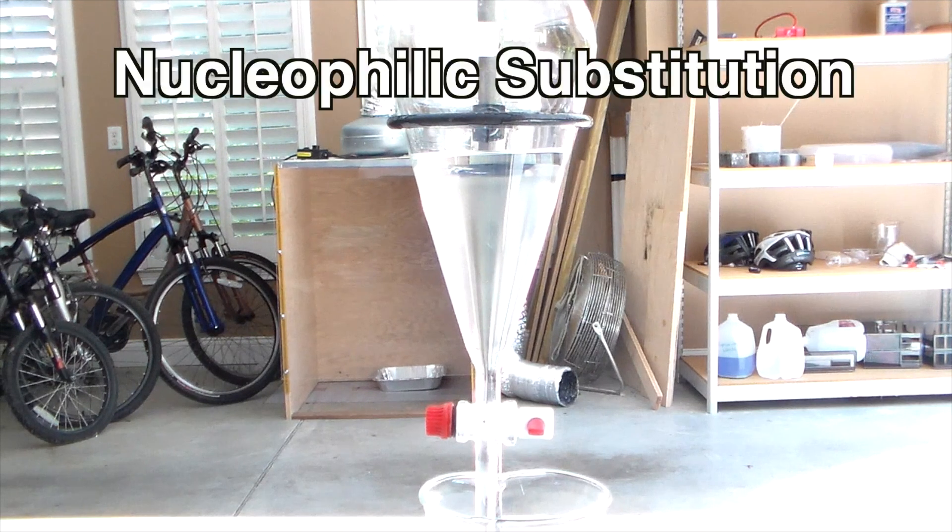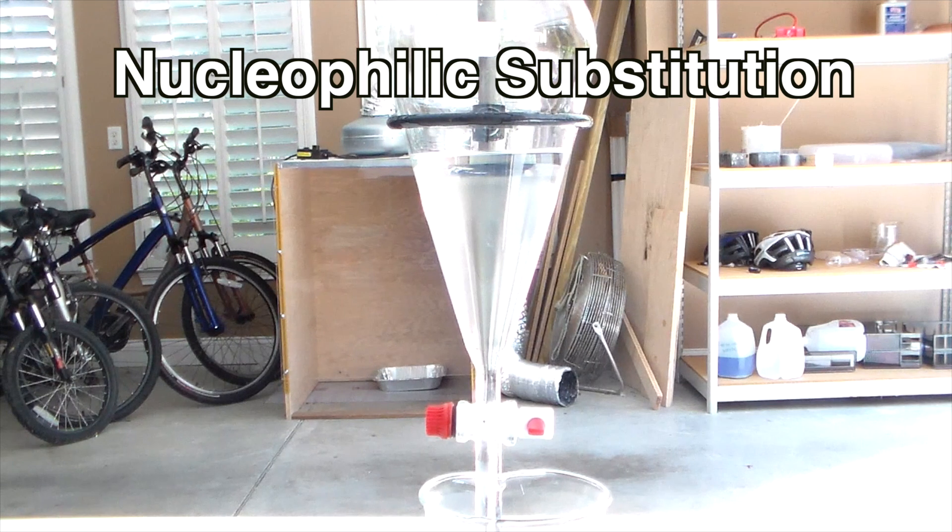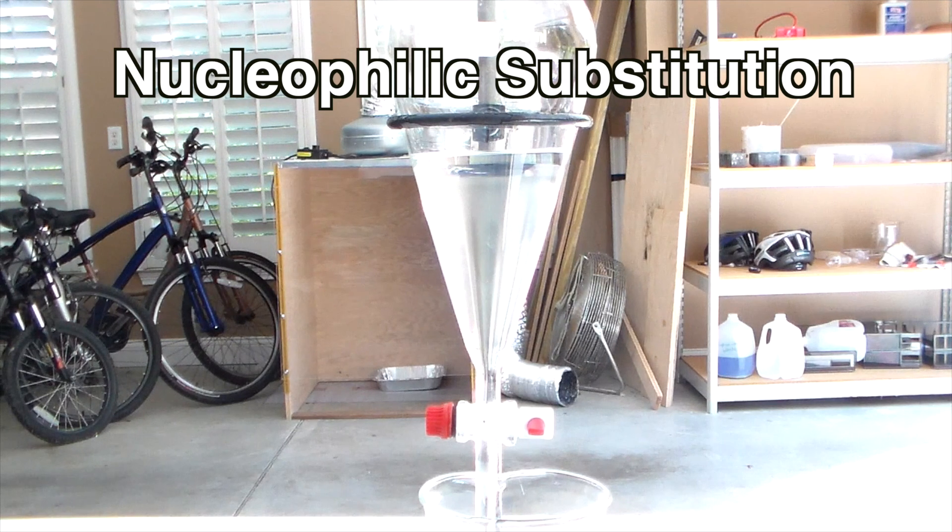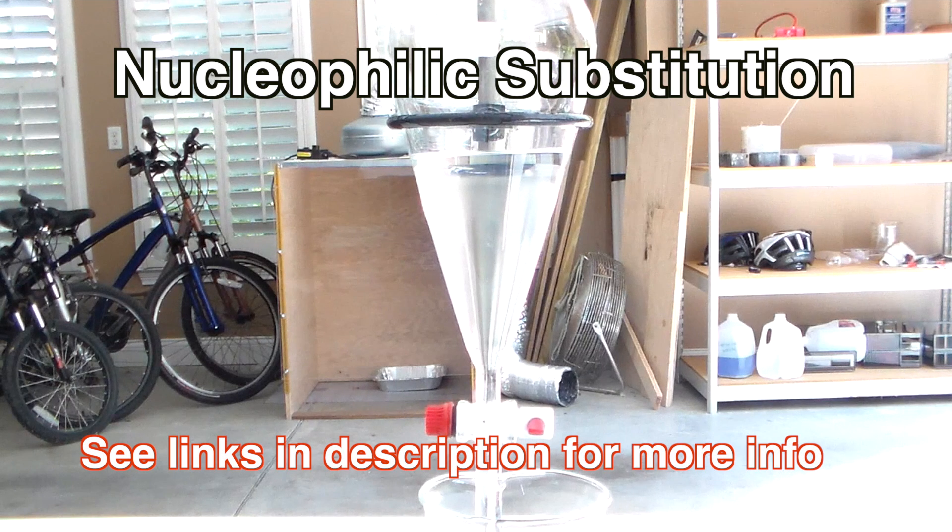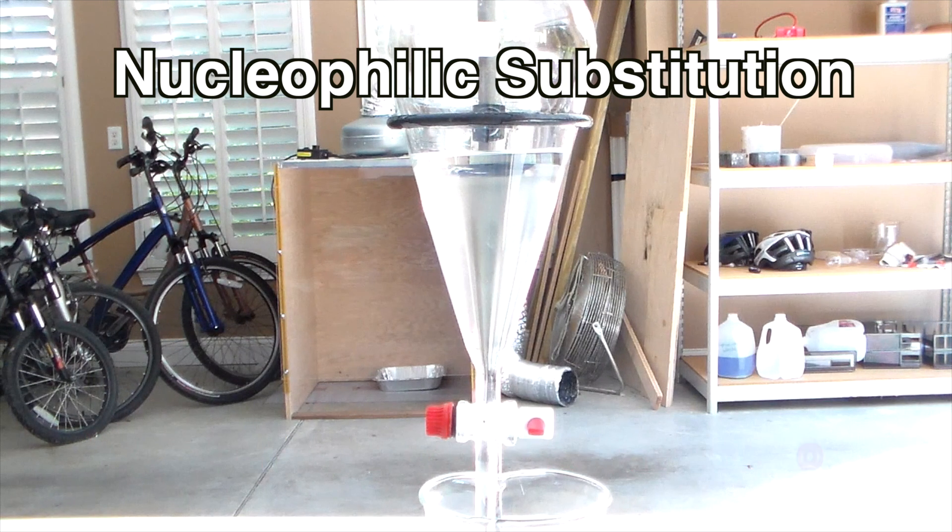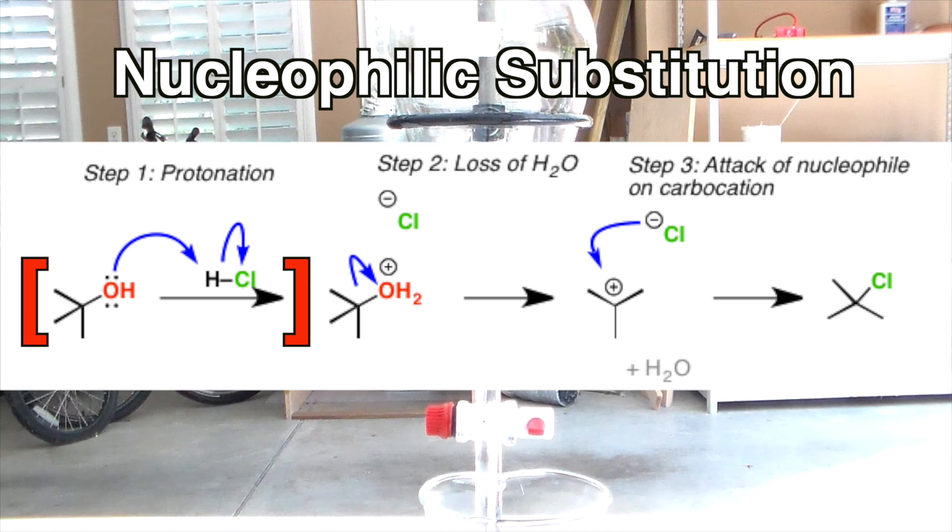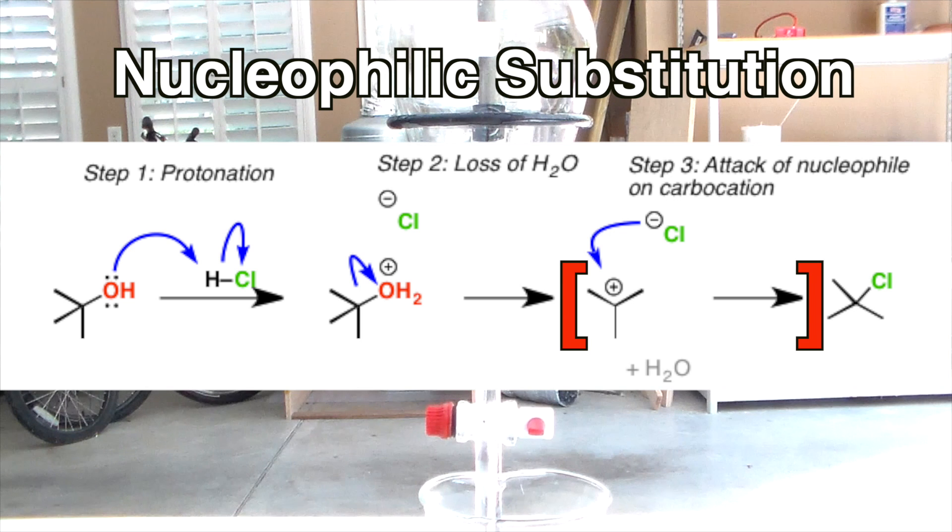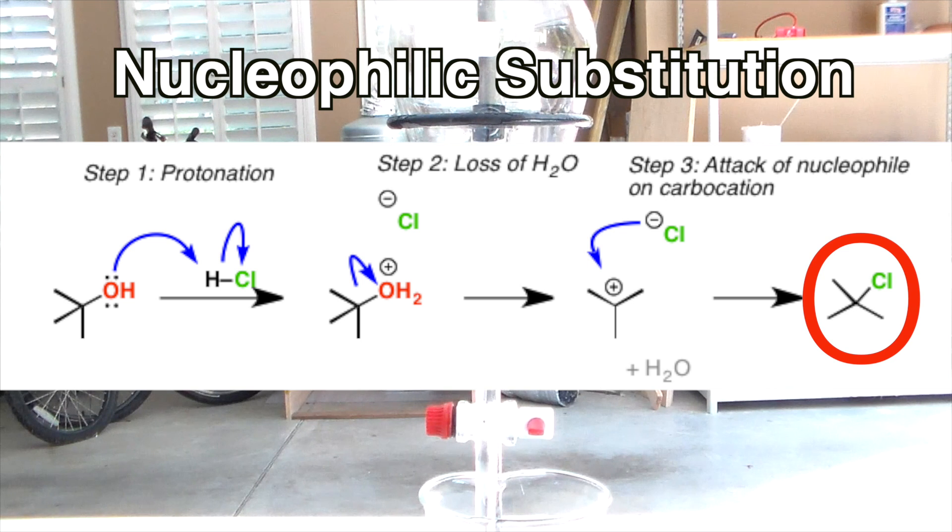This type of reaction is called nucleophilic substitution. I'm not going to explain nucleophilic substitution in great detail, but I have provided links in the description to where you can learn more about it. In the first step, the hydrochloric acid protonates the tert-butyl alcohol. This forms OH2+, which is a so-called leaving group, because it readily detaches from the molecule to form water and a carbocation.